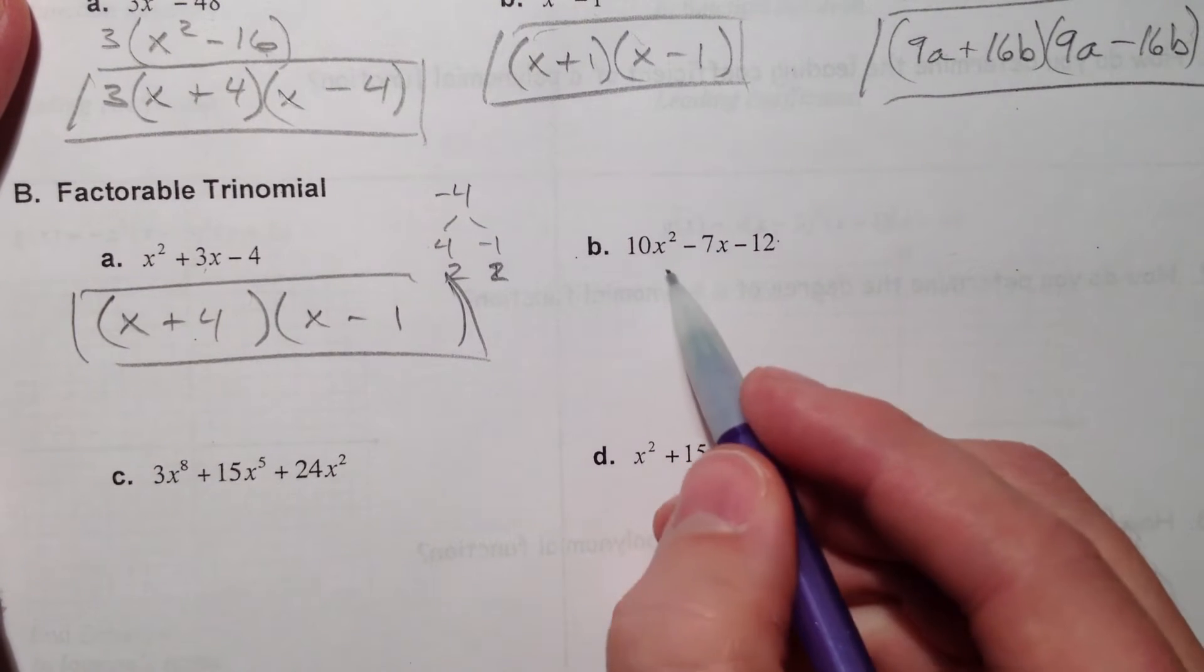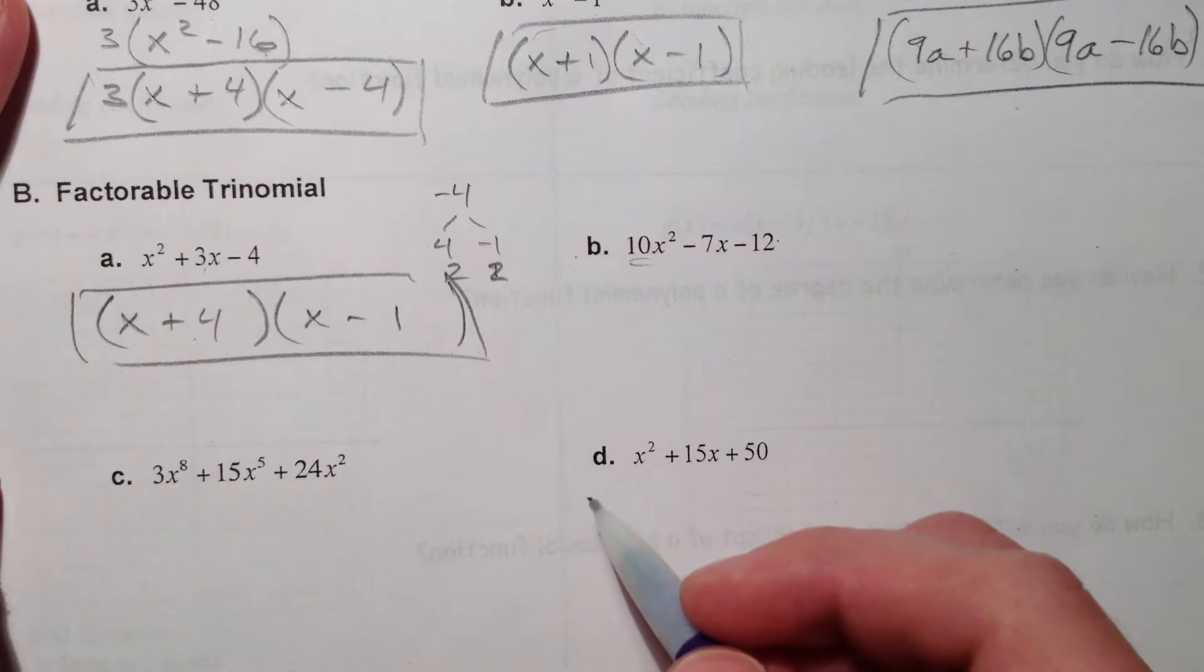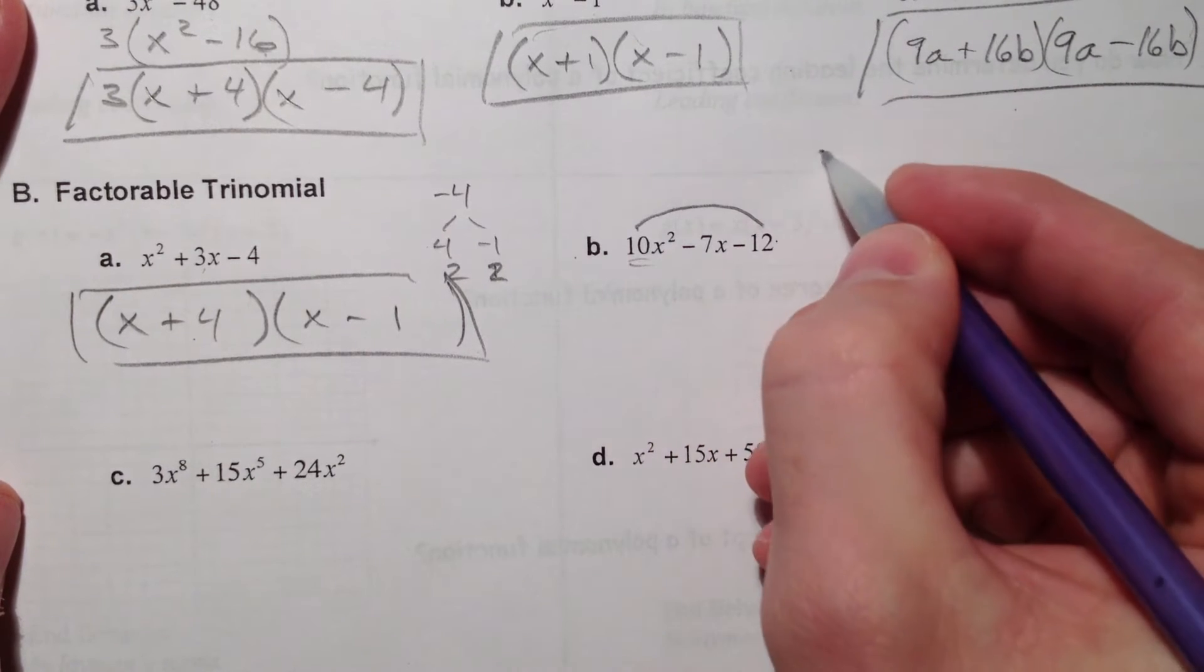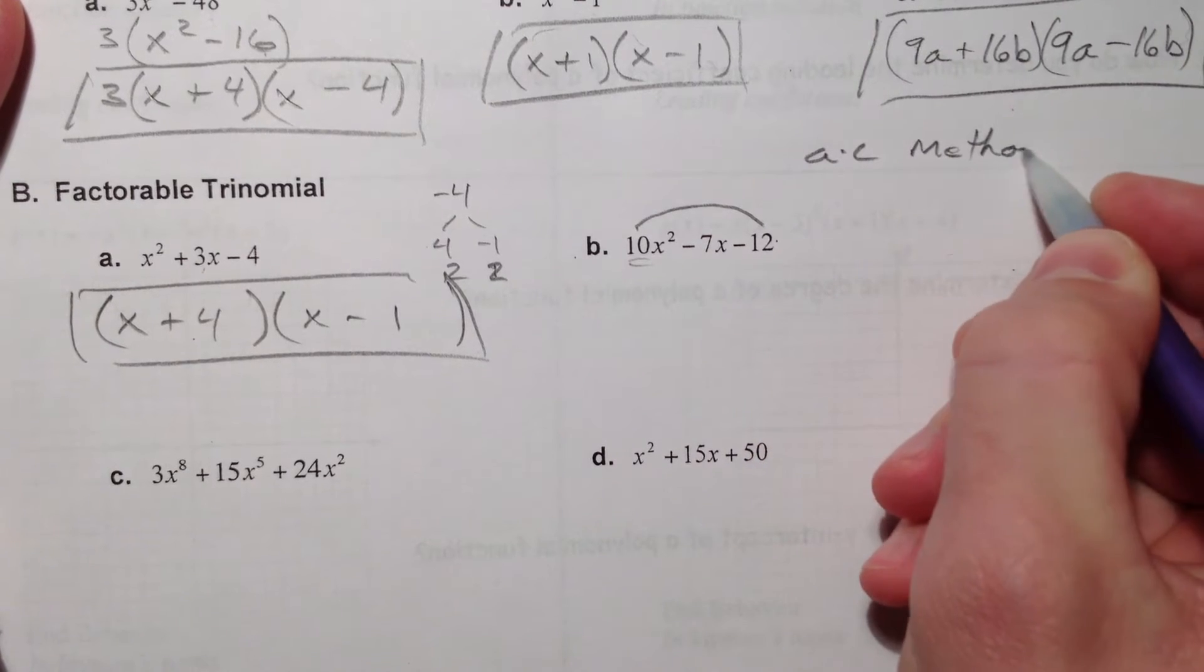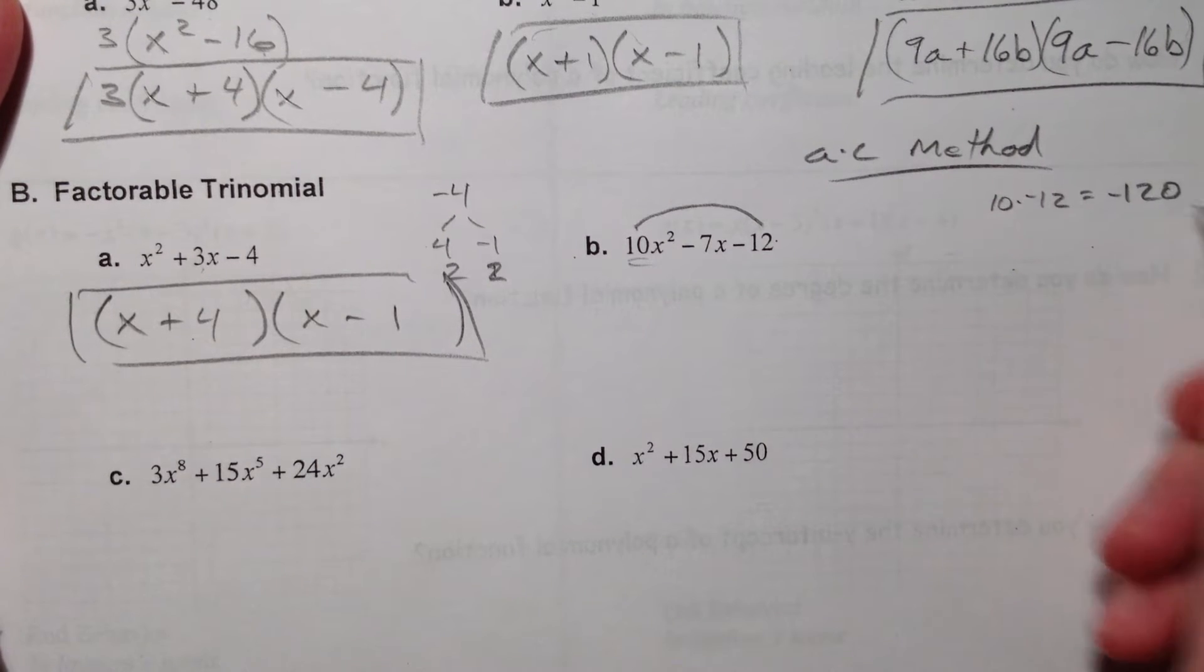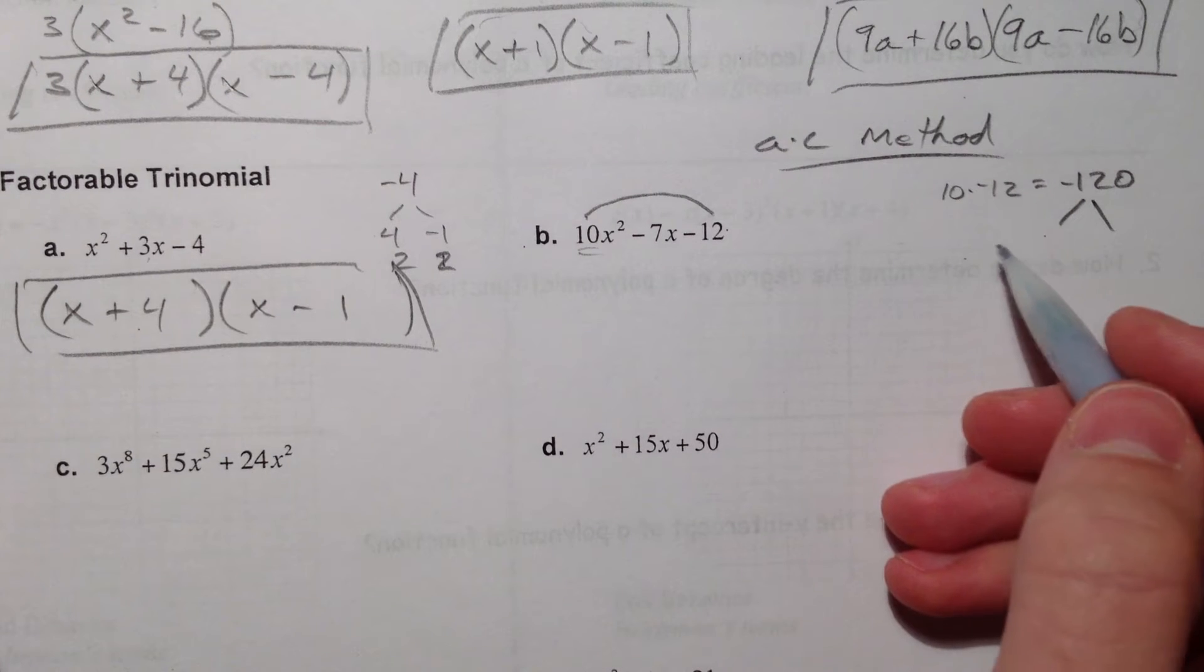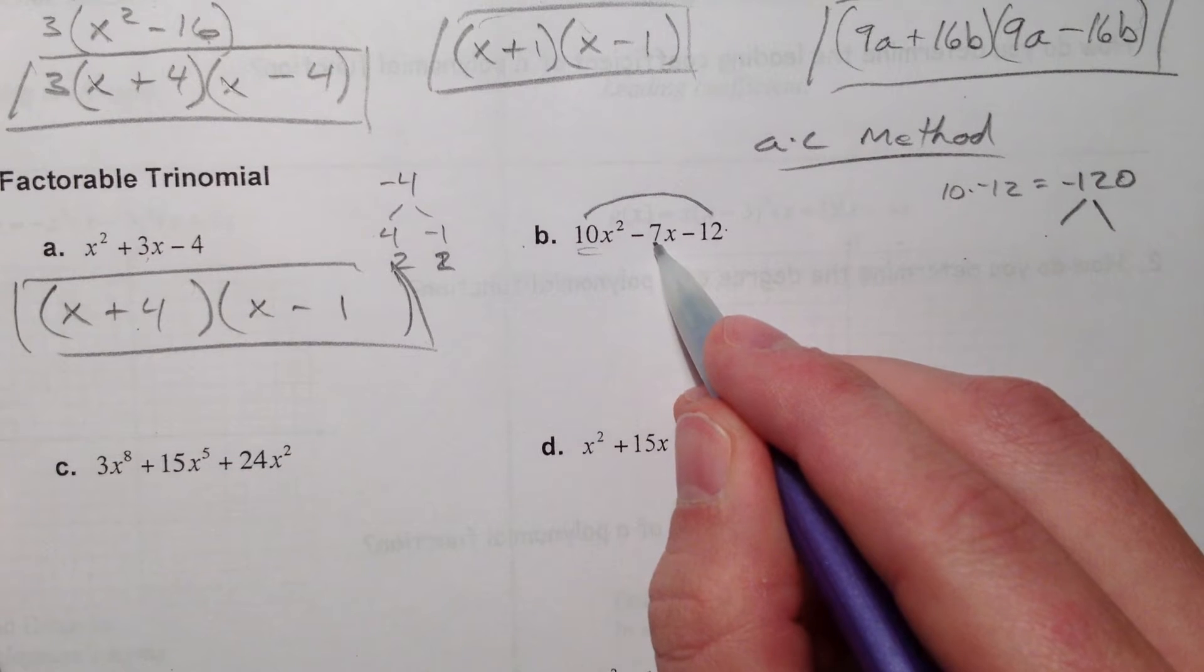Alright, part B. These are the ones that get a little trickier because this is no longer 1. And so the first thing I do is I use the AC method on all of these. And we're going to use it repeatedly here. So the AC method is when we multiply 10 times negative 12. Get negative 120. We've done this before, so this should be review.